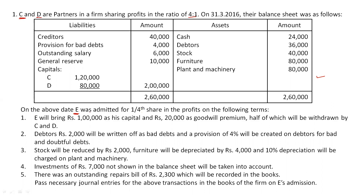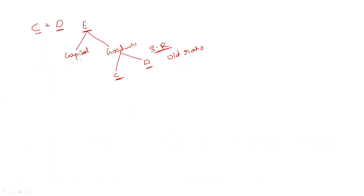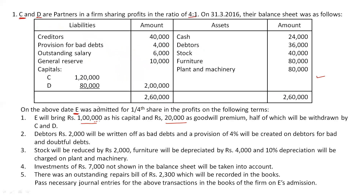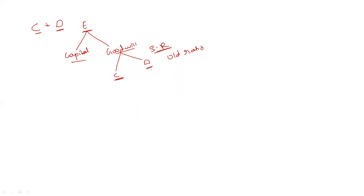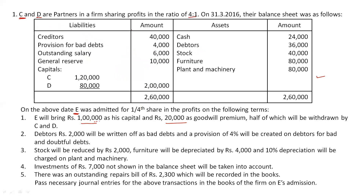On the above date, E was admitted for one-fourth share in profits on the following terms. E will bring rupees one lakh as capital and rupees 20,000 as goodwill premium — as I mentioned, the partner brings amount in two forms: capital and goodwill. Then they are telling half of the goodwill will be withdrawn by C and D. Further, debtors of rupees 2,000 will be written off as bad debts and a provision of 4% will be created on debtors for bad and doubtful debts.